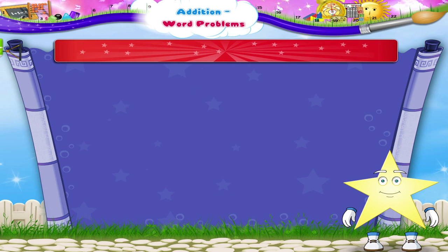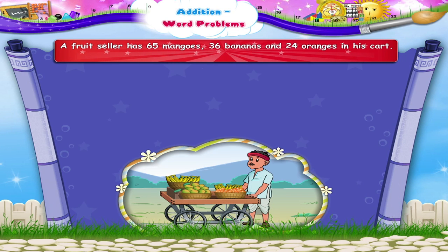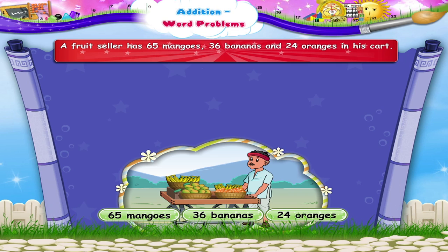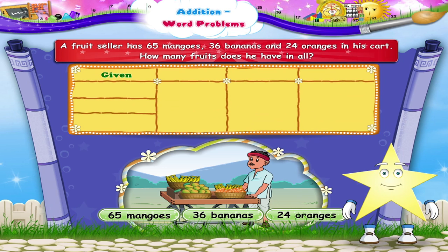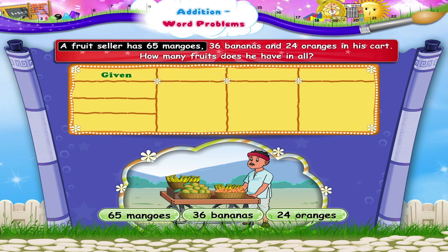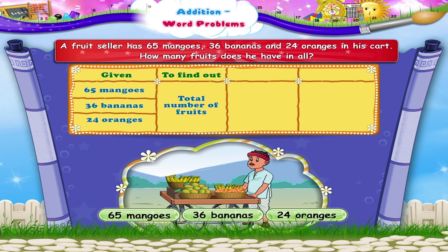Let us solve the next example. A fruit seller has 65 mangoes, 36 bananas and 24 oranges in his cart. It is given that the fruit seller has 65 mangoes, 36 bananas and 24 oranges. What do we have to find? Yes, we have to find the total number of fruits. So what should we do? We shall add all the number of fruits.